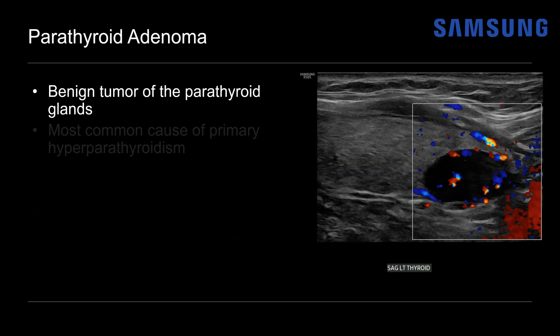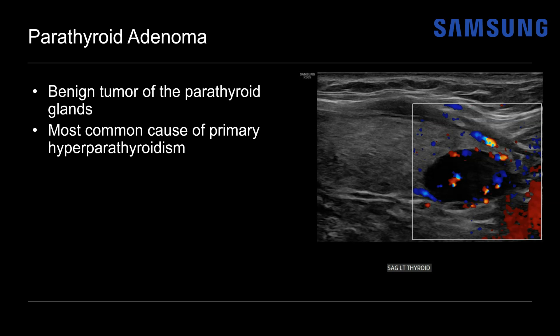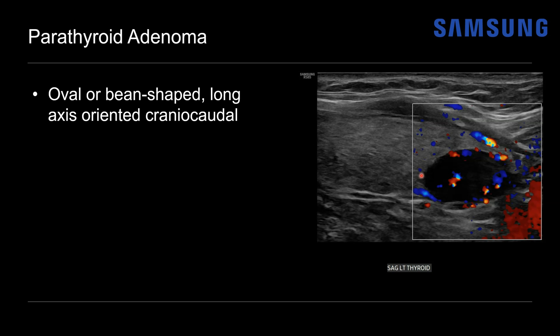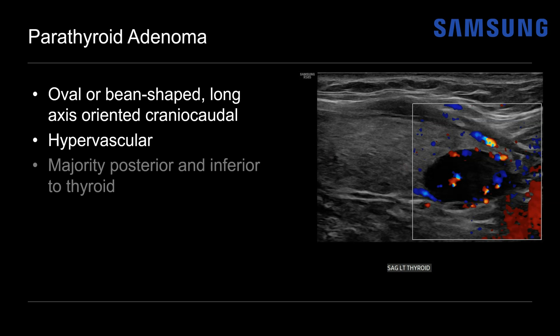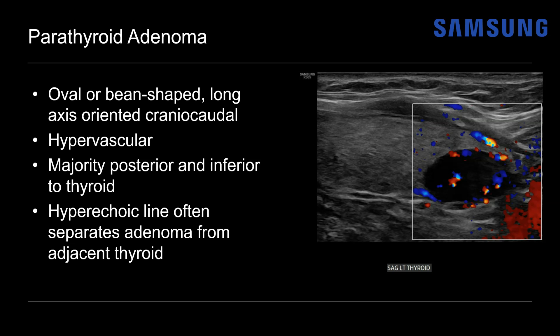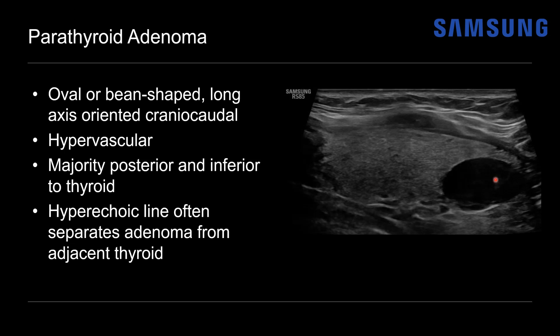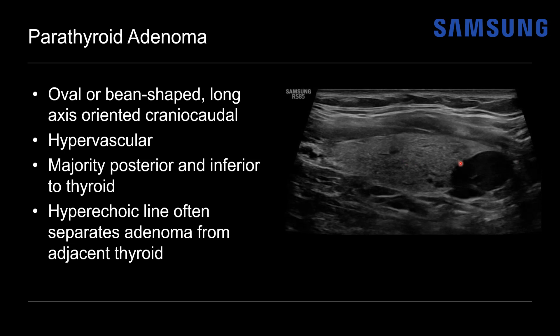This finding is typical for parathyroid adenoma — a benign tumor of the parathyroid glands and the most common cause of primary hyperparathyroidism. Patients usually present with elevated serum calcium and parathyroid hormone levels. On ultrasound, these adenomas will usually be solid, homogeneous, and very hypoechoic, as in this case. Sometimes they can have atypical features such as cystic degeneration and rarely calcification. They're usually ovoid or bean-shaped with their long axis oriented cranial-caudal, and they're often hypervascular. Most will be posterior and inferior to the thyroid gland. They can mimic a nodule, but a hyperechoic line separating the adenoma from the adjacent thyroid may be seen, and this is sometimes better appreciated on real-time imaging — here we can see that thin hyperechoic line and this ovoid, very hypoechoic, solid nodule oriented in long axis with the thyroid gland.